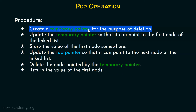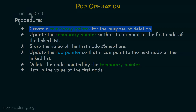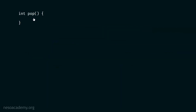Let's create a temporary pointer for the purpose of deletion. This is our pop function — the return type is int because this pop function will not only delete the element but will also return the first element of the stack back to the caller. That is why the return type must be int. Here I have to declare a temporary pointer called temp. This is struct node star temp, which means that this temp pointer will point to some node.